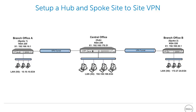This network diagram shows the setup we use for this video tutorial. We have three sites with a SonicWall UTM appliance at each site. The central office SonicWall, which is the hub, has the X0 interface in the LAN zone in the 192.168.168 subnet. The branch office SonicWalls are the spokes. Branch office A has its LAN in the 10.10.10 subnet, and branch office B has its LAN in the 172.27.24 subnet. Our aim is to create a site-to-site VPN between the central office SonicWall and each branch office SonicWall. After configuration, the central office network must be able to communicate with the spokes, and the spokes must be able to communicate with each other through the hub.